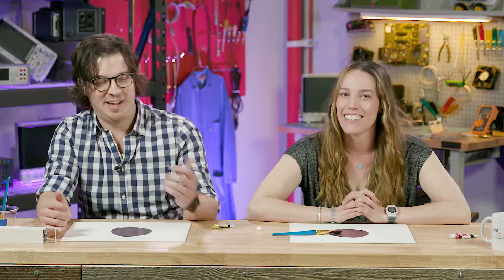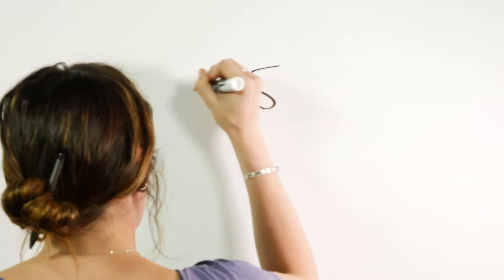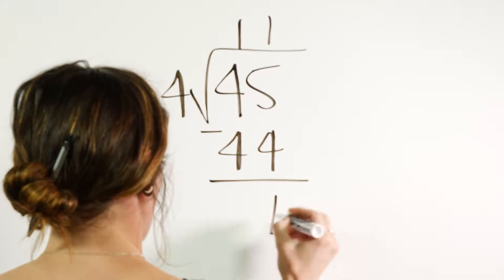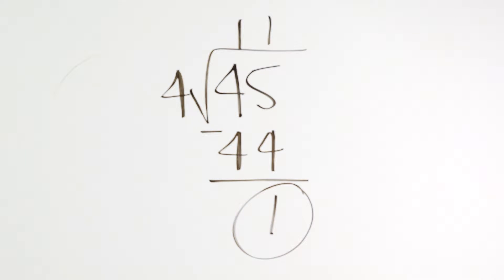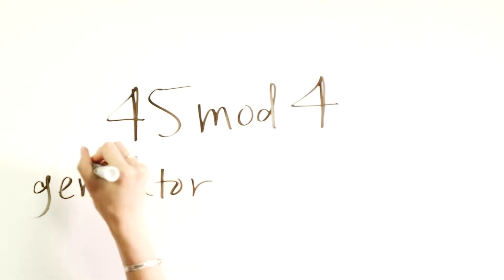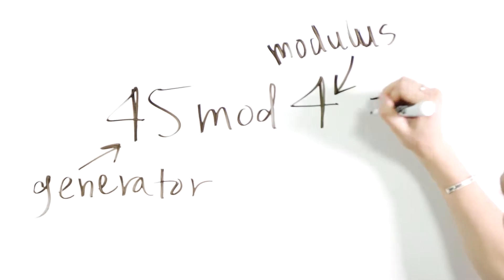Cool. So, do you know what modular arithmetic is? Do I look like I know what modular arithmetic is? I'm not going to answer that. But it's basically when you find the remainder of a division, like 45 divided by 4 equals 11 with a remainder of 1. It's written like 45 mod 4, where 45 is the generator and 4 is the modulus. 45 mod 4 equals 1. Modular arithmetic only cares about the remainder. I'm following you so far.